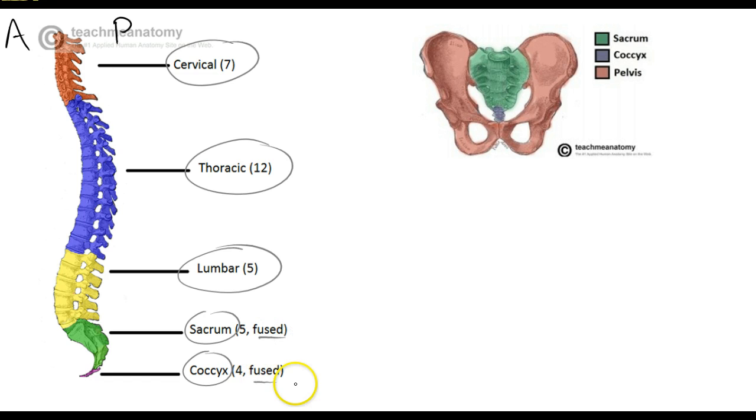And these bones are fused. There's no movement that occurs between those. They actually appear as two separate bones, one coccyx bone and one sacrum bone, although they are made up of five and four fused bones.